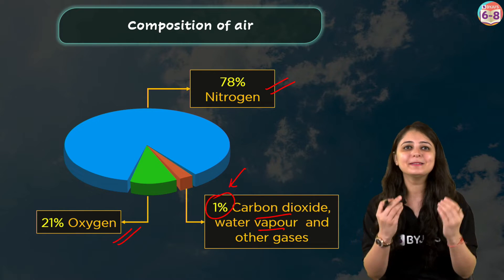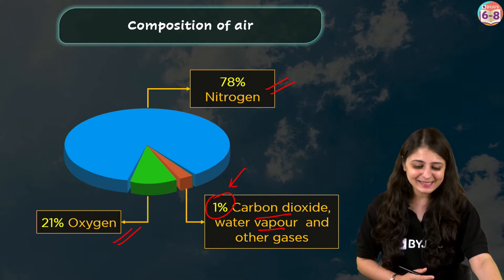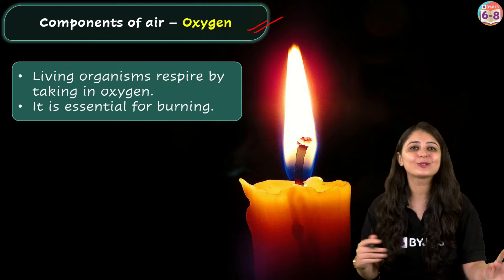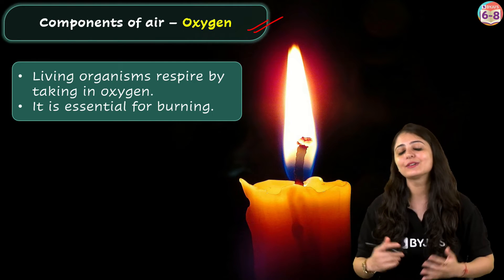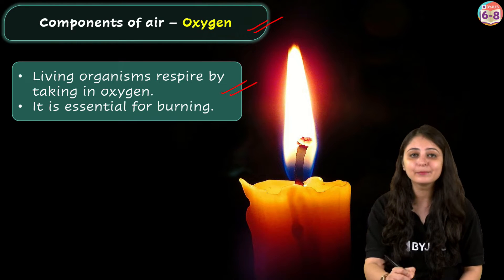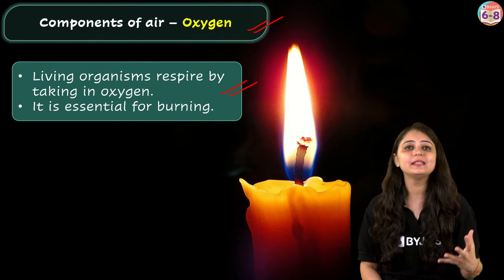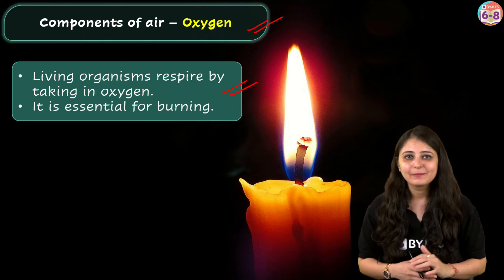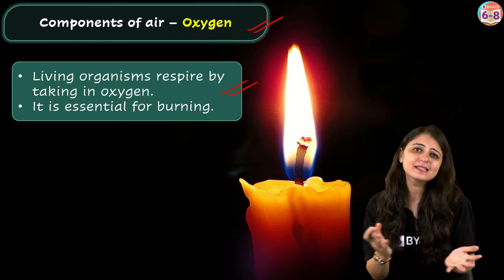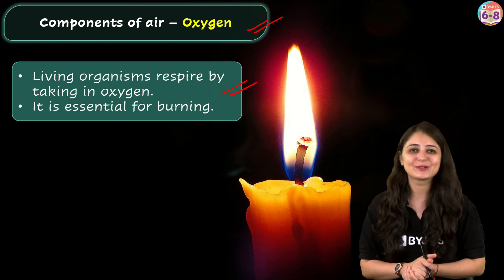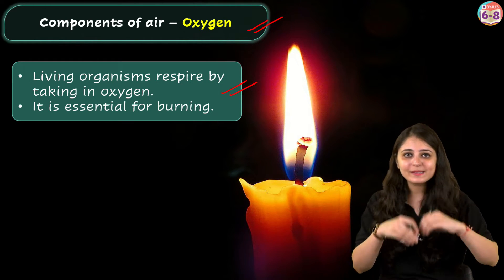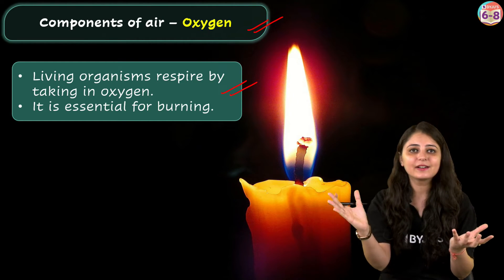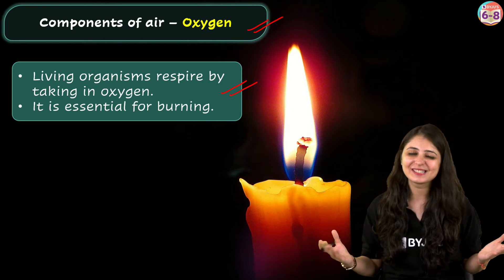Let's talk about some major gases, starting with a very important one: oxygen. Oxygen is essential for almost all living organisms on Earth. Trees and plants also use oxygen, but they give off oxygen as a waste product during a process known as photosynthesis. This oxygen is what we breathe, and oxygen supports life.